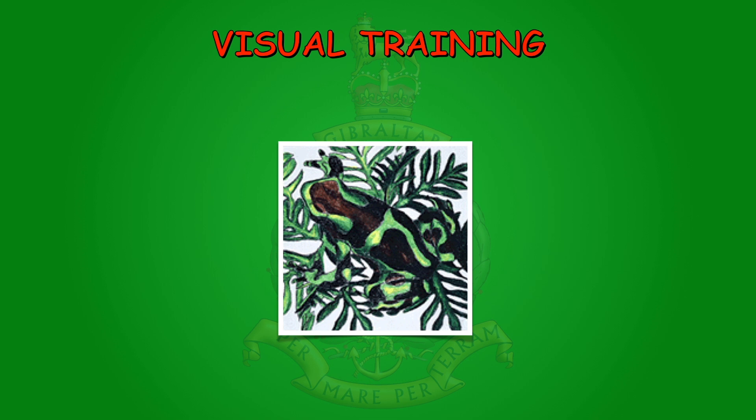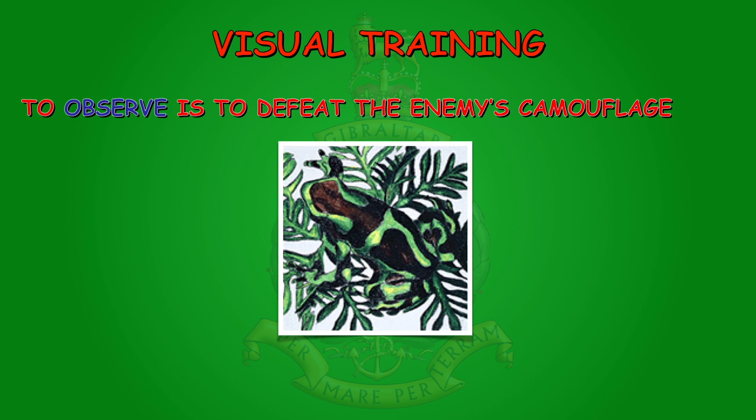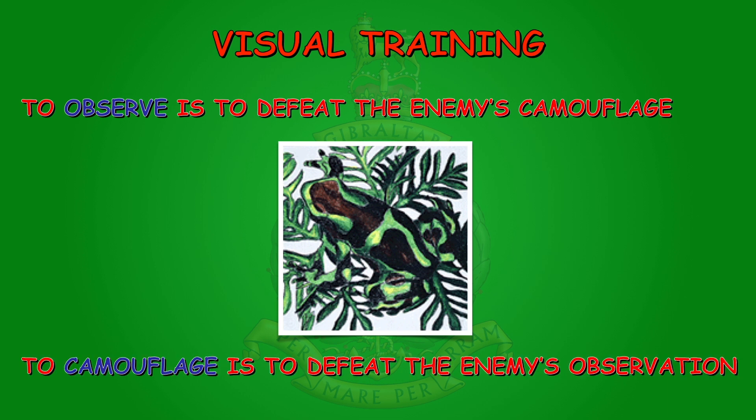Visual training is training to observe, joined with a knowledge of how to conceal. To observe is to see through the enemy's camouflage. To camouflage is to defeat the enemy's observation. So after this training and some practice in concealment, you'll be able to see the enemy hopefully without being seen yourself.